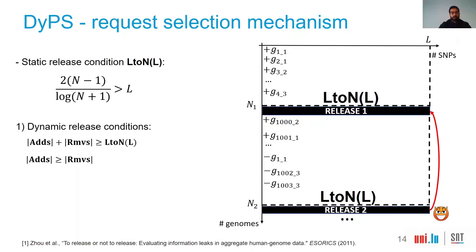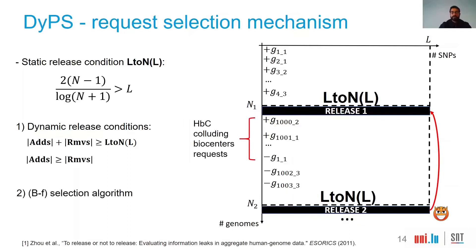In our paper, we show that by following simple properties, we can ensure always-safe releases even when they are combined, and we don't need a brute-force approach to enumerate every existing release. These properties are: first, when selecting a safe batch of requests, we ensure we have more additions than removals; second, the number of addition and removal operations is bigger than the log2(N) function. In addition, we ensure that any subset of biocenters is protected against collusion from others.